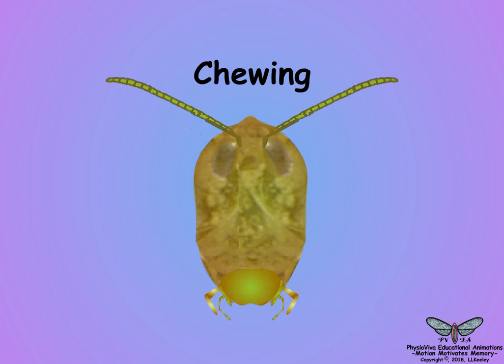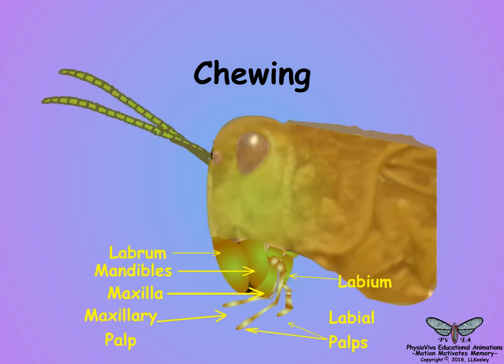Chemoreceptors for tasting the food are present on all the mouthparts except the mandibles. Here is a side view to show the internal arrangement of the mouth.